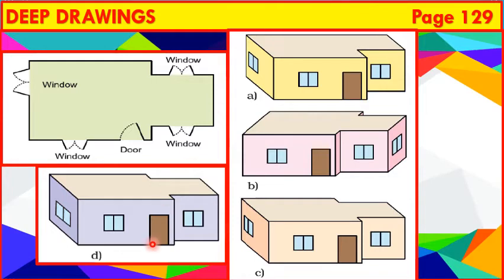Drawing D shows left side window in the center of the wall. But here, in the floor map, the window is shown in one corner. So, drawing D also does not match the floor map. Drawing C matches the floor map. So, Vibha's house is figure C. Circle it.